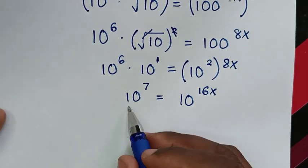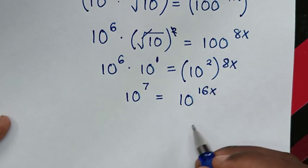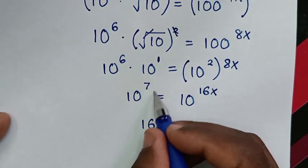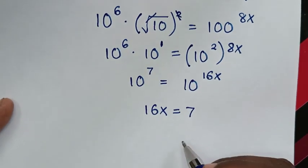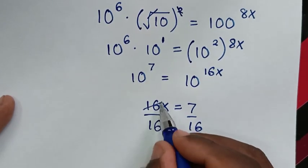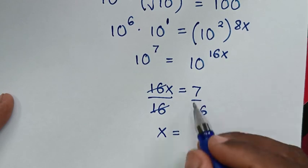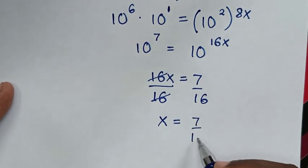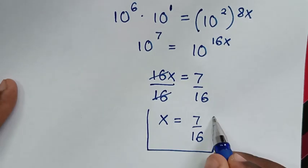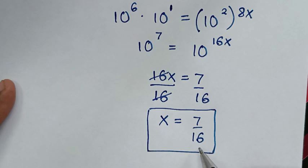Now we have the same base of 10 on both sides, so we compare the powers. We get 16x equals 7. Dividing both sides by 16, we get x equals 7 over 16. This is the final answer for the value of x.